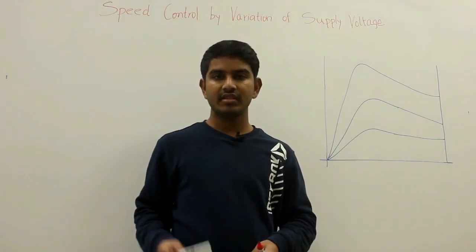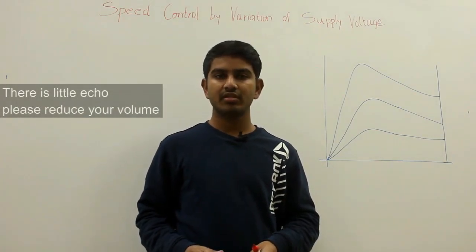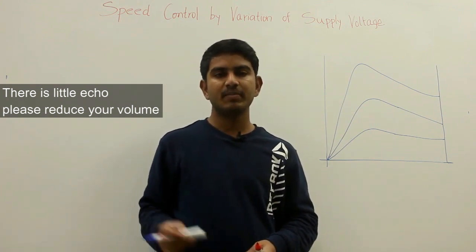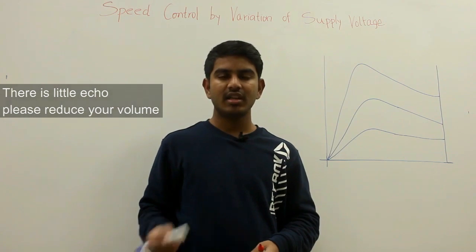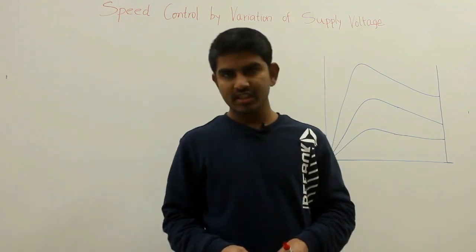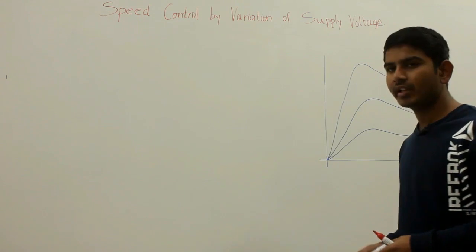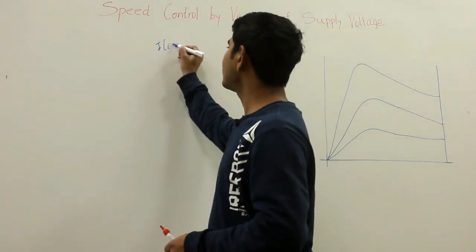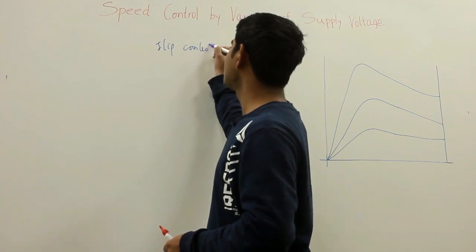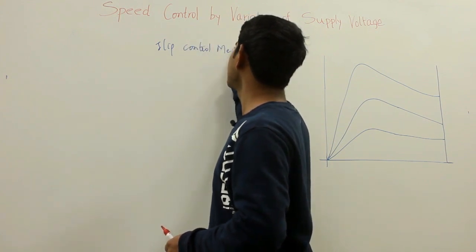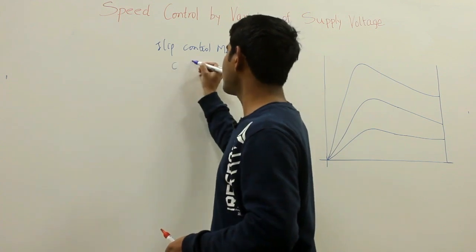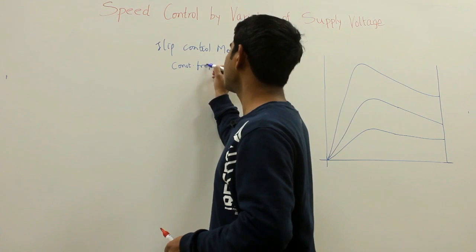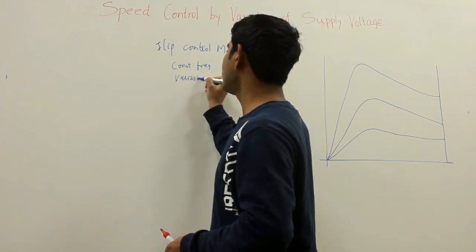Hello friends. In this video, let us discuss the speed control by variation of supply voltage in induction motors. In our last video, we discussed speed control by variation in supply frequency. This method of speed control by variation of supply voltage is a slip control method — basically a slip control method with constant frequency and variable voltage.